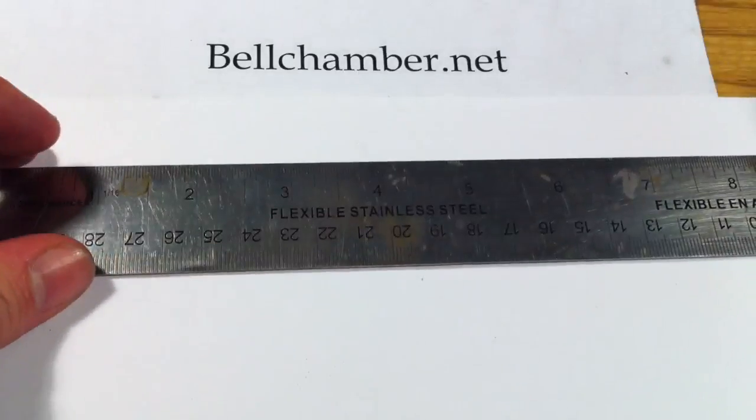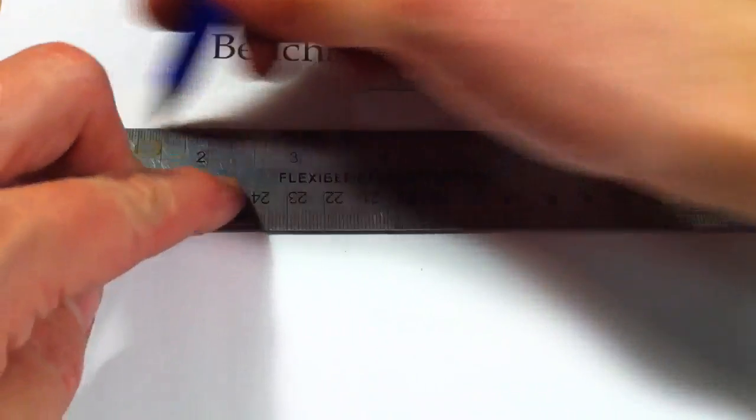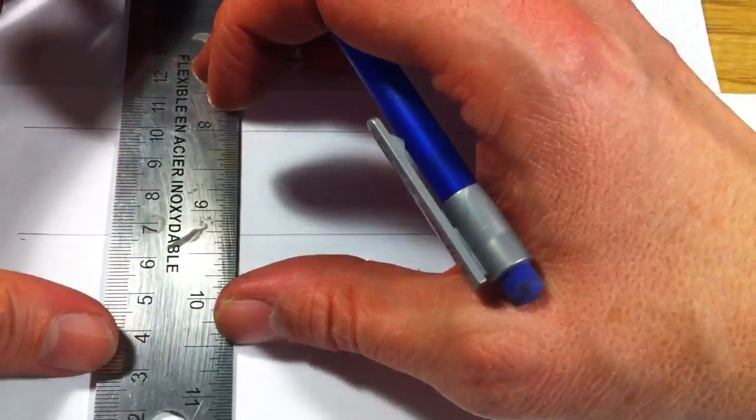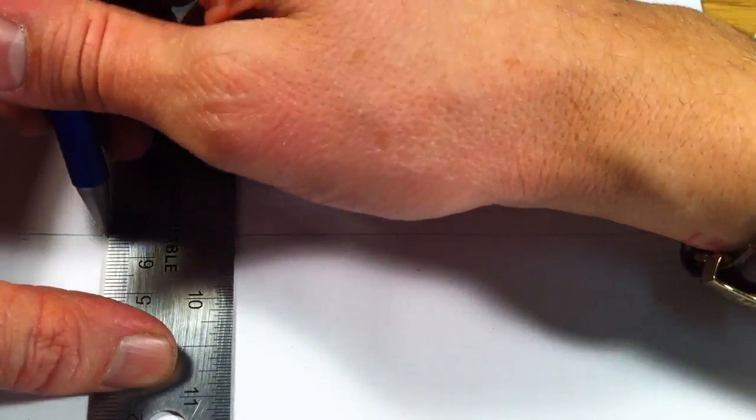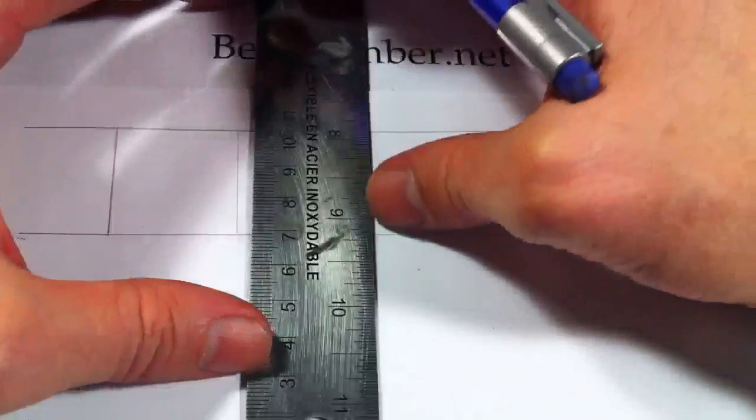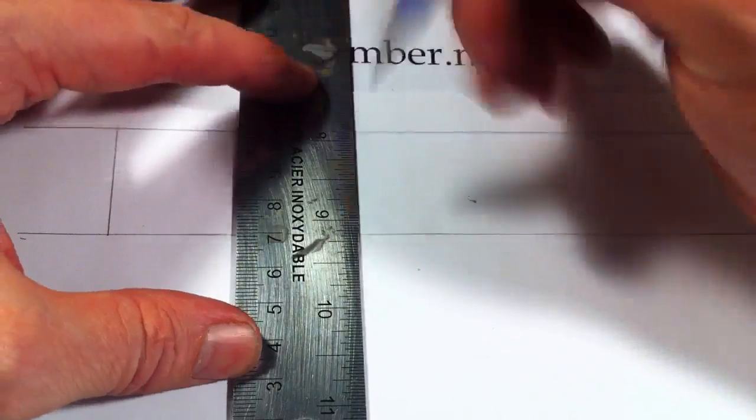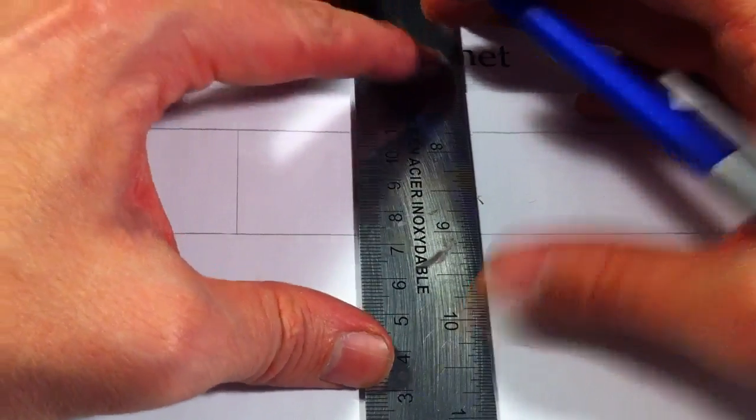Begin by taking your ruler and drawing on the top and the bottom. Next, make a grid by turning your ruler perpendicular.